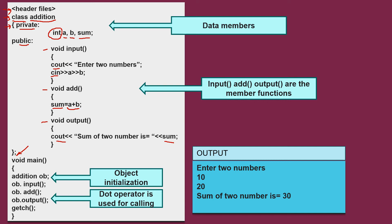Now, in the main function, first you will be declaring or initializing your object with the help of the name of your class that is addition, then object name. Dot operator is used to call the functions.